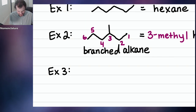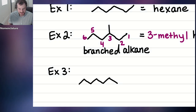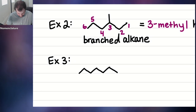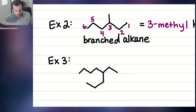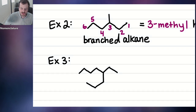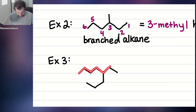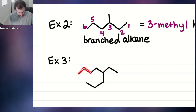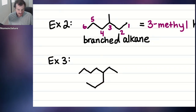Let's do another example. Step one is always the same: find the parent chain, find the longest chain. Let's start counting: one, two, three, four, five, six, seven — we've got a chain of seven. But let's try another path: one, two, three, four, five, six, seven, eight. We do have an eight. That's longer than seven.